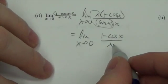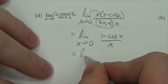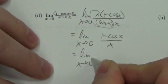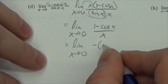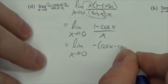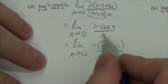Now I'm going to factor out a negative here, and I'll show you why in just a second. At least you'll see it. If you take a negative out of the numerator, this becomes (cos x - 1) / x.